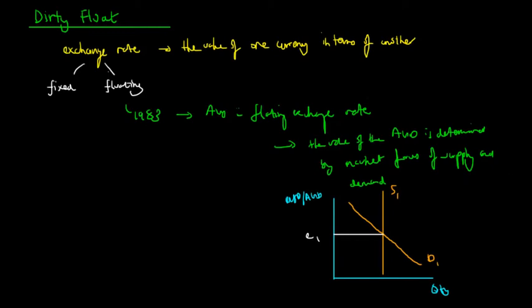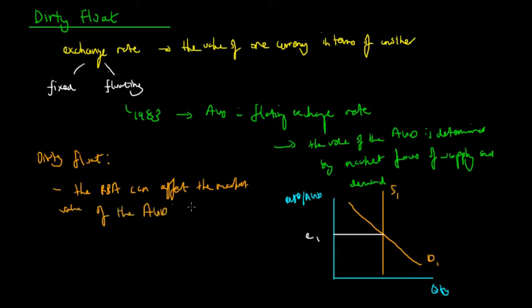Australia has adopted what is called a floating exchange rate. However, the dirty float is an amalgamation of both the fixed and floating exchange rate. What that means is that the RBA can affect the market value of the AUD as it wishes by becoming a net buyer or seller of the AUD.